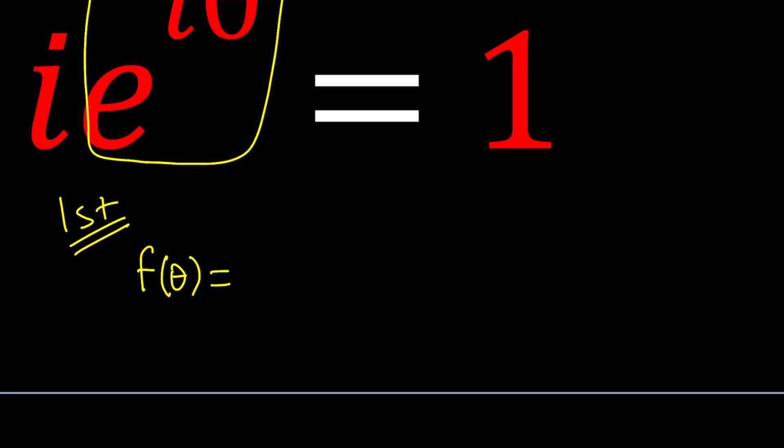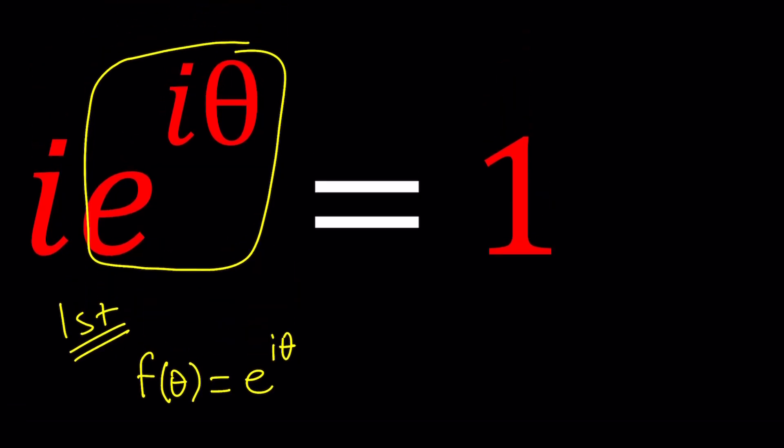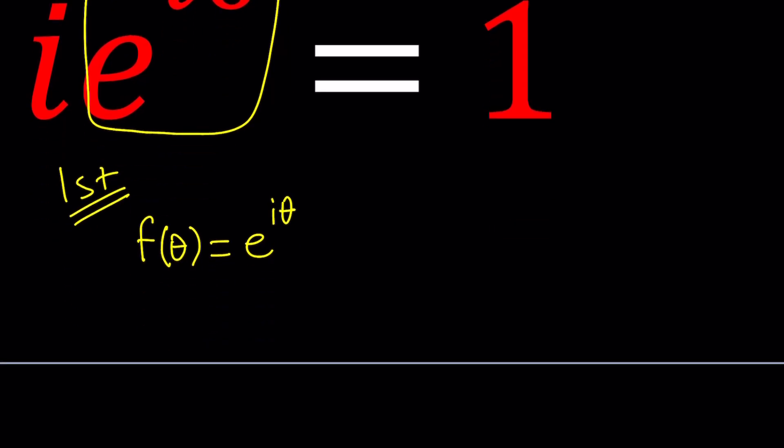I'm going to call that a function of theta. f(θ) equals e to the power iθ. I'm about to do something to this function so that I can get the given expression on the left hand side. I'm going to go ahead and differentiate f with respect to theta. In other words, this is going to be df/dθ.